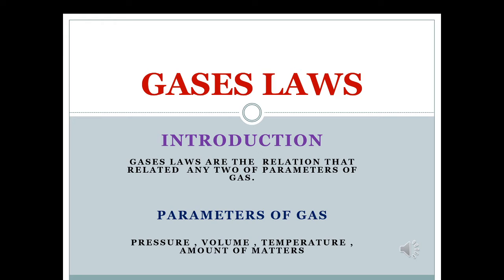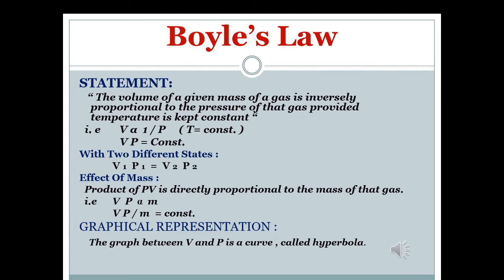The question arises: what are the parameters of gas? We have basically four different parameters of gas — pressure (P), volume (V), temperature (T), and amount of matter which we use in terms of mass (m). These are the parameters of gas.